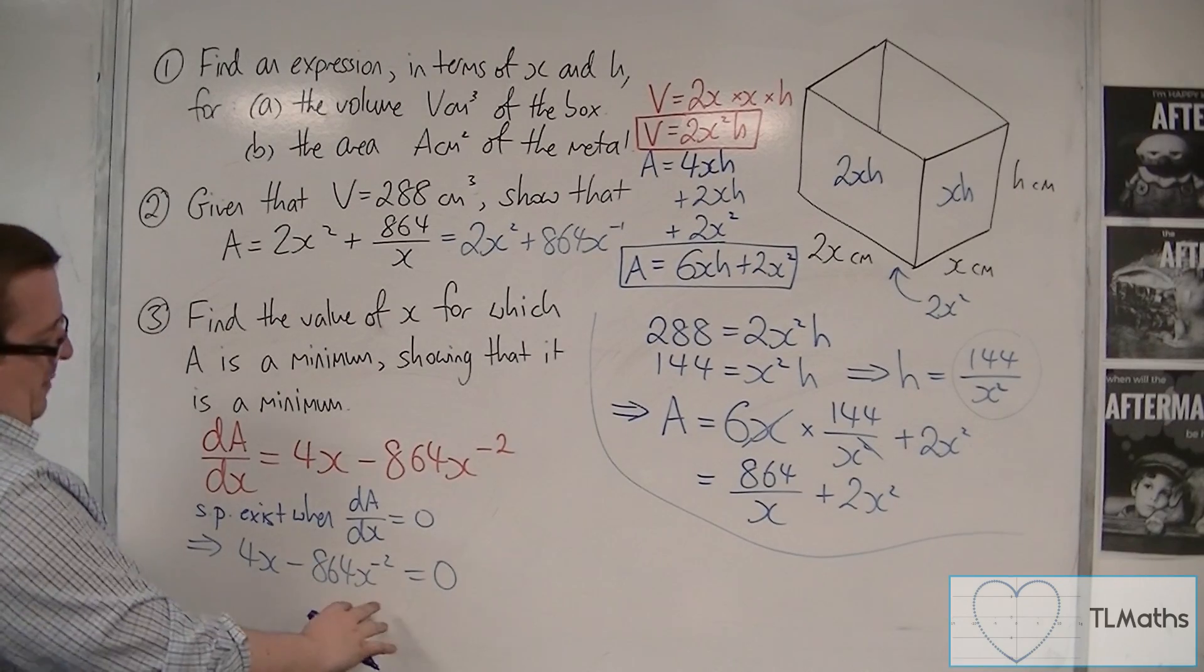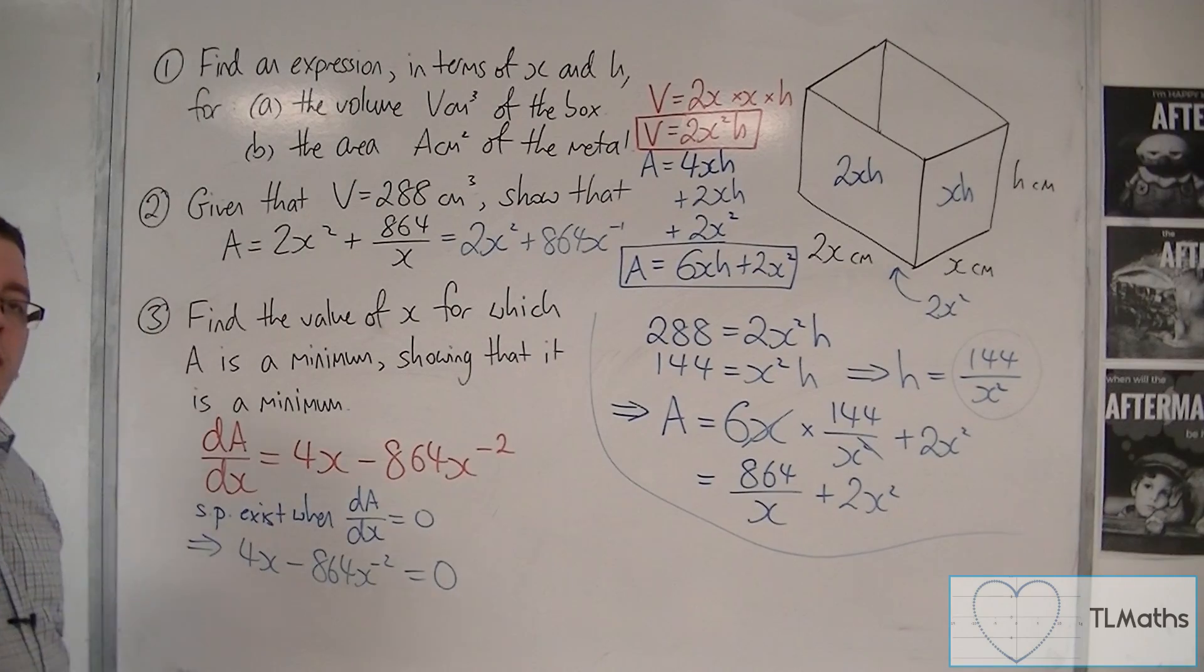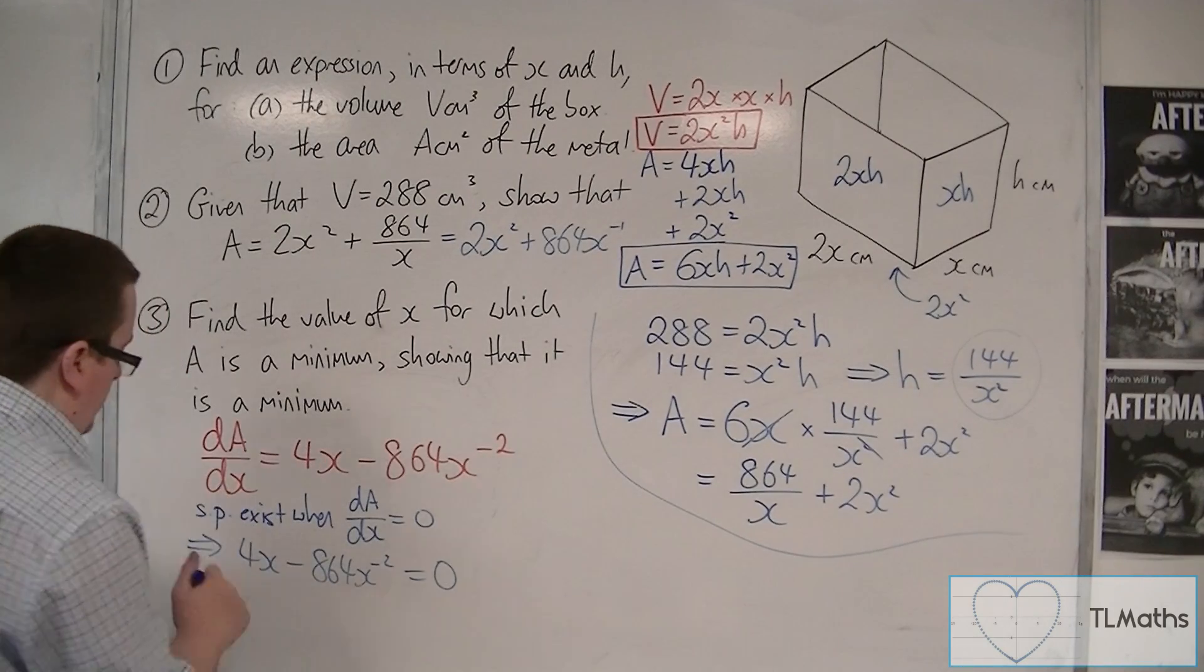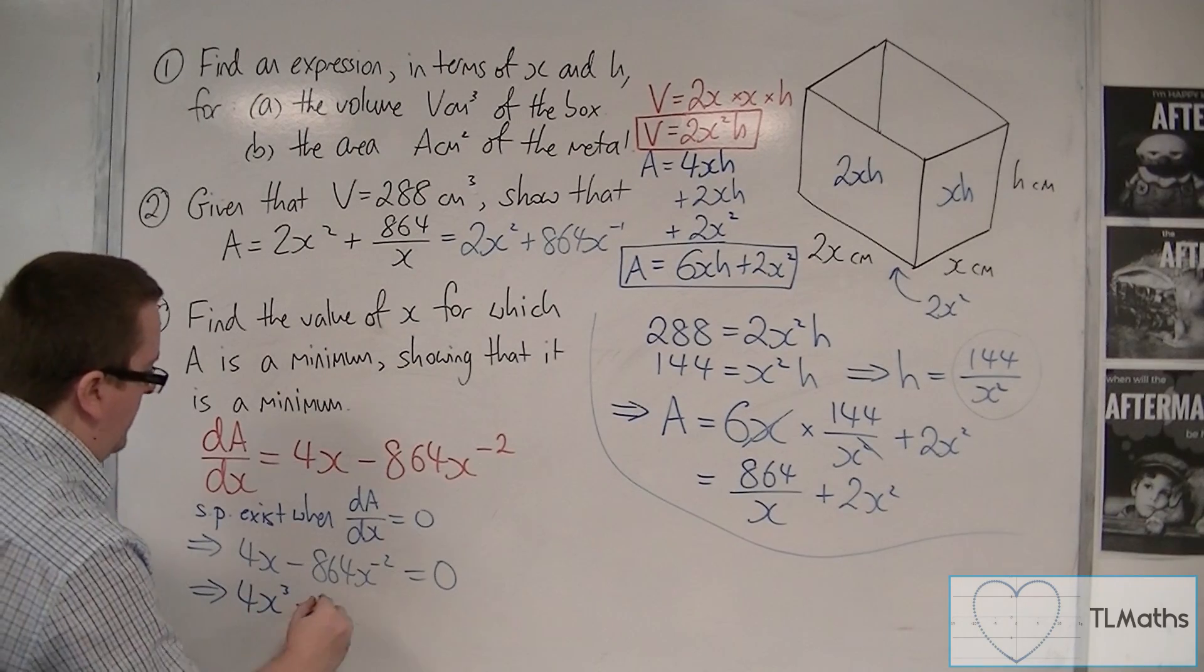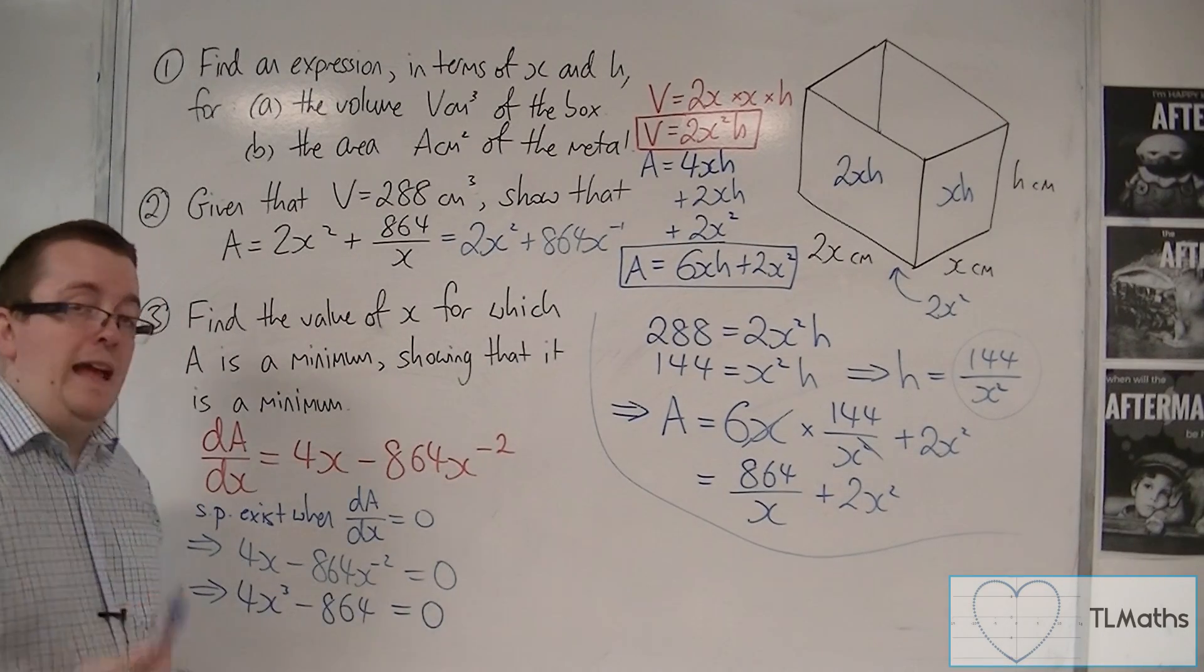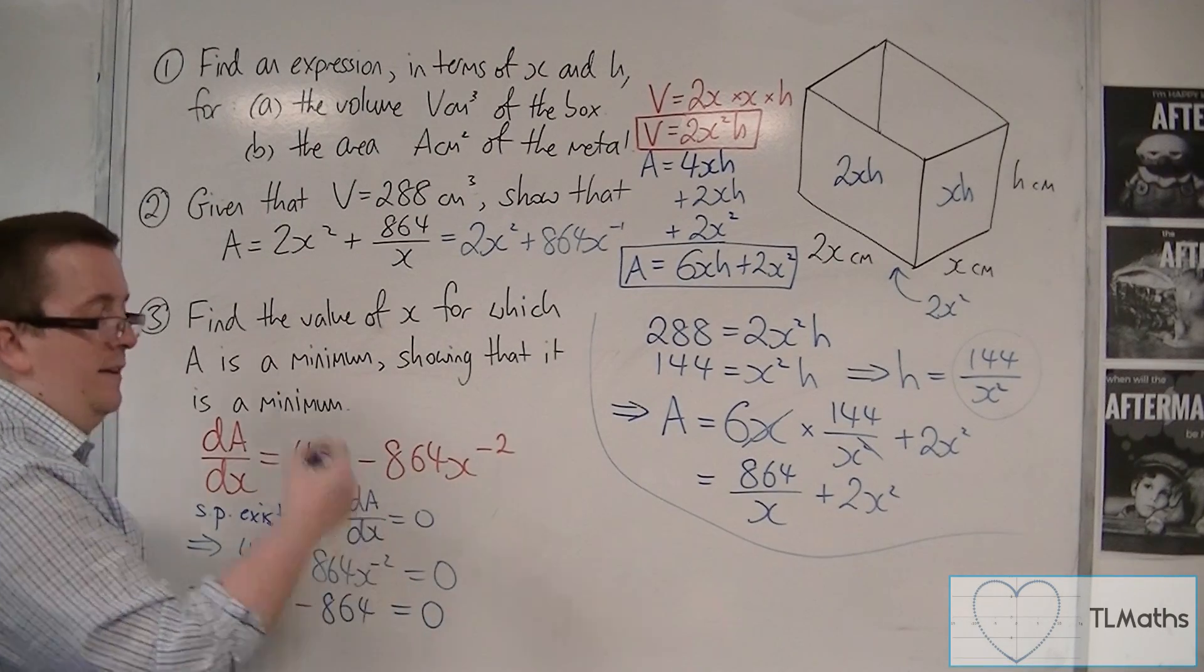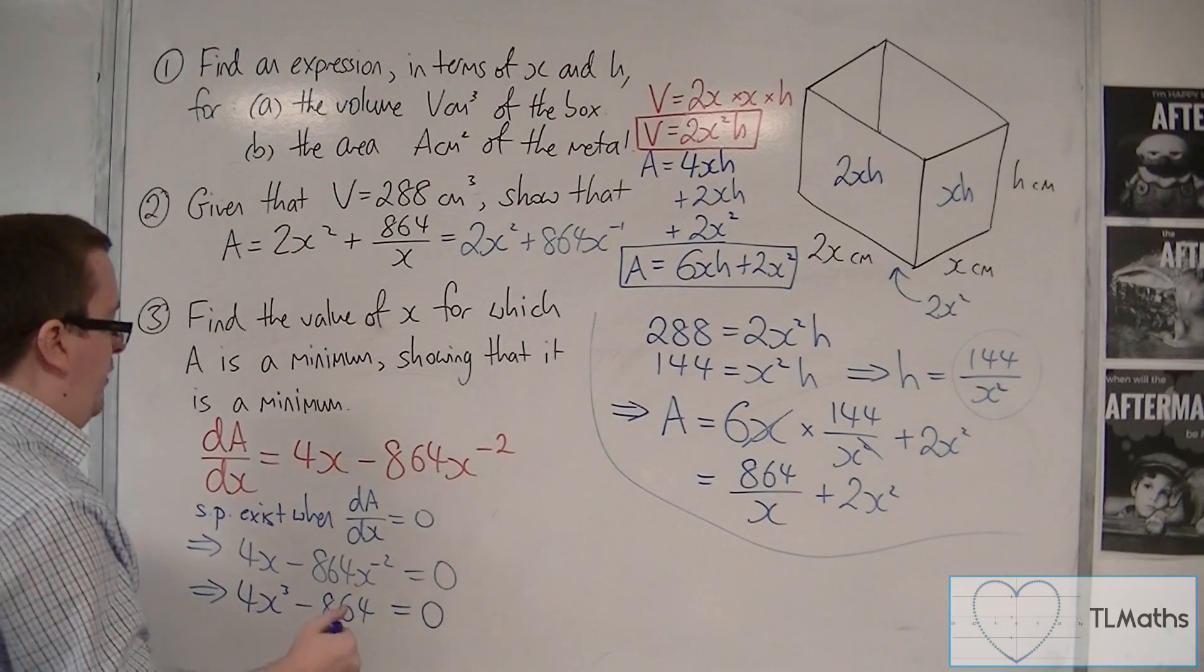Now, what's troubling is this x to the minus 2. So, to get rid of that, I could multiply the whole equation by x squared, which will get rid of this term here. So, I'd be left with 4x cubed, take away 864, is equal to 0. So, that's multiplying both sides by x squared. Because x to the minus 2 times x squared is x to the 0, which is 1.